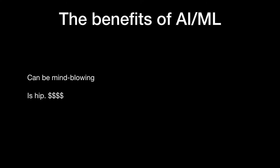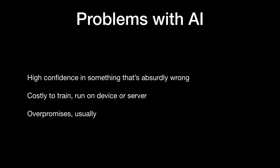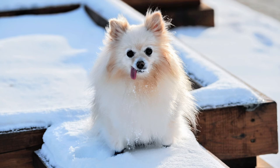Benefits of AI: it can be mind-blowing, it's really cool — it might get you venture capital or team members, and it's the future. Downsides: it can have really high confidence in something that's wrong; it's costly to train and to run on device (though that's getting better); and it often over-promises. Here's me running an ML5 thing — it correctly identifies a banana, but the next guesses are pretty far from crazy. It's like a little dog that's lovely but occasionally just barks at the wall for no reason.